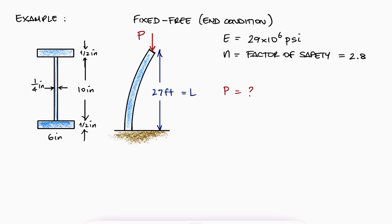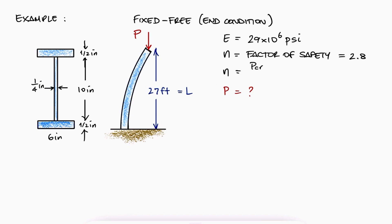If the factor of safety is defined as the critical load over the current load P, the load that we're looking for would be the critical load over n. From Euler's formula, we know we need to find the second moment of area I and the effective length L_e.